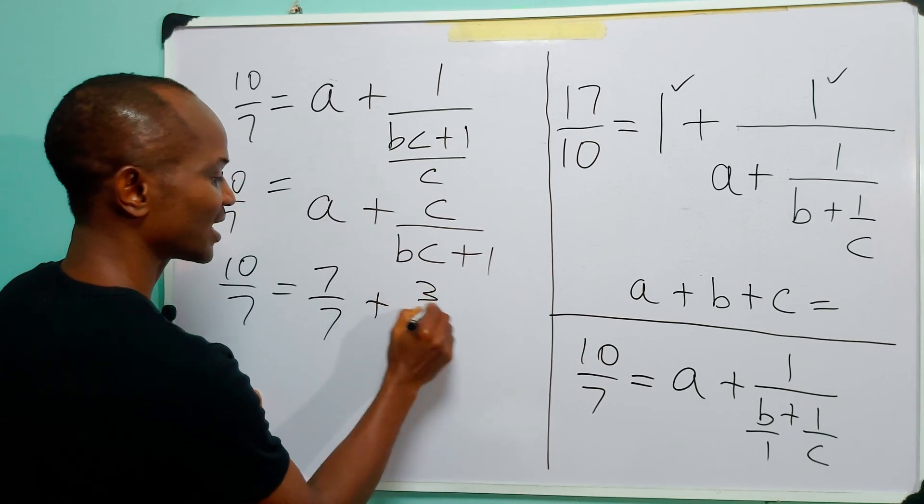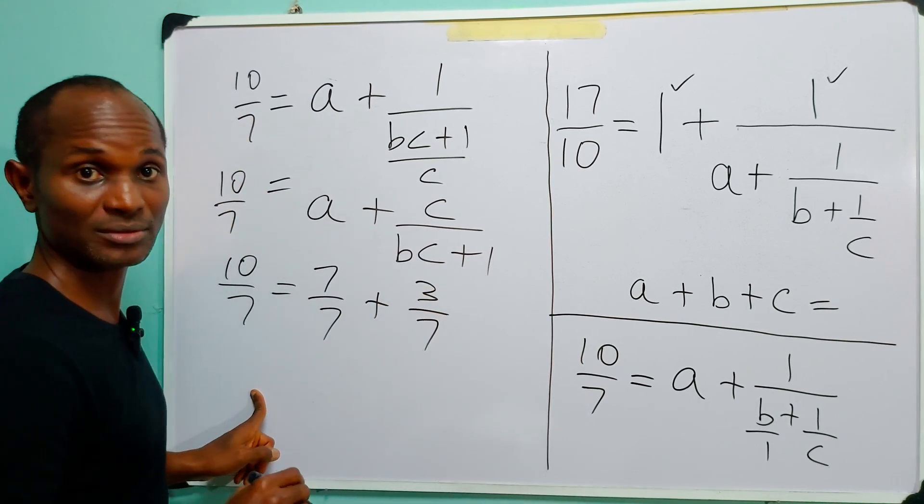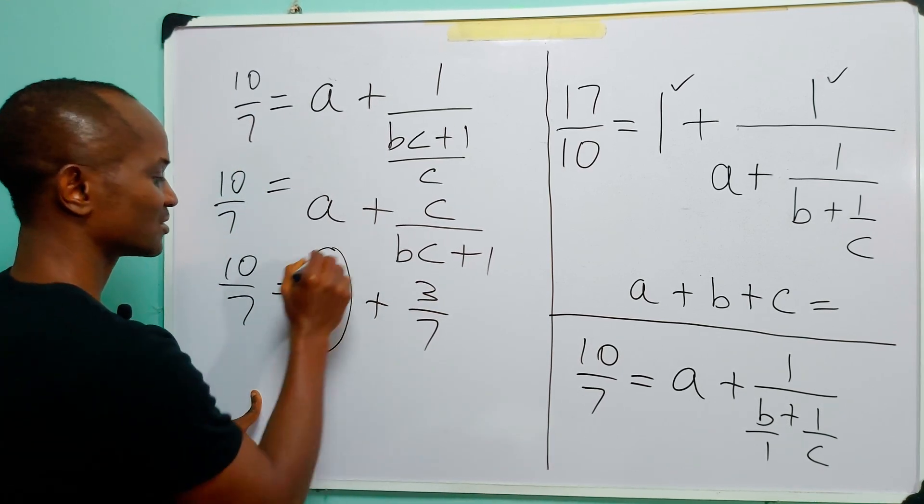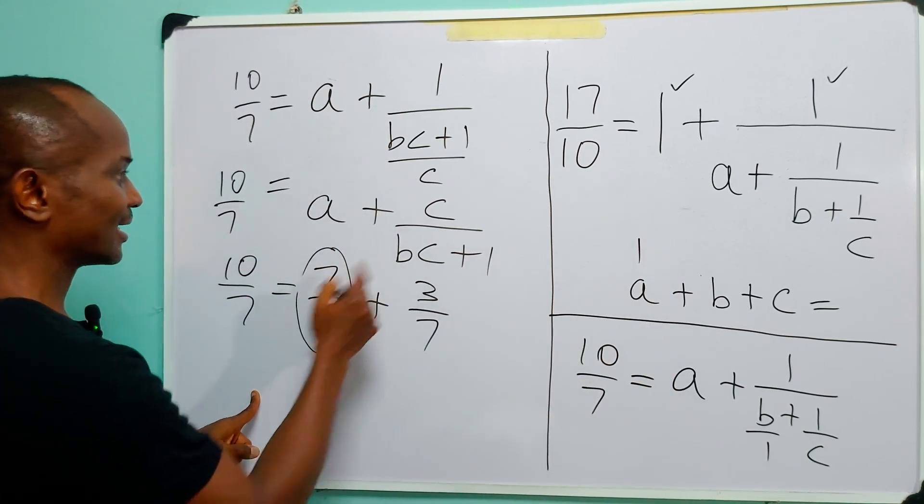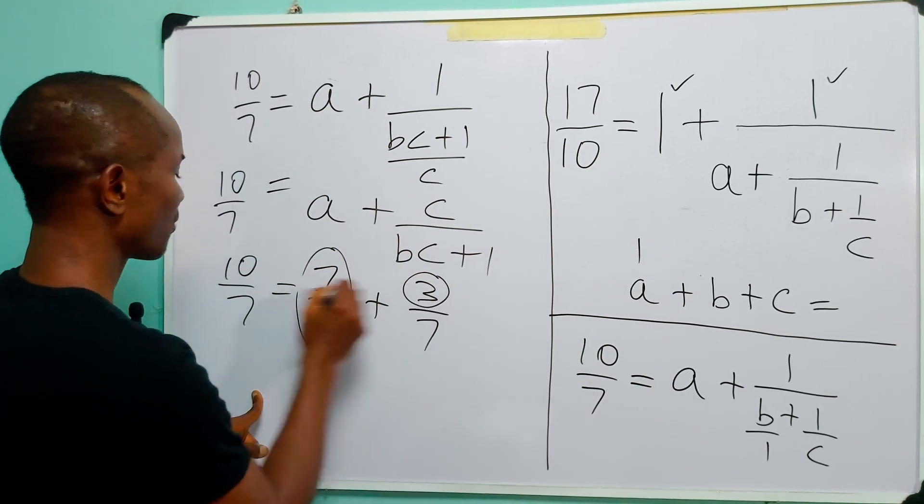And we are left with 3 over 7. That tells us that A must be equal to 7 over 7, which is 1. And C must be equal to 3.